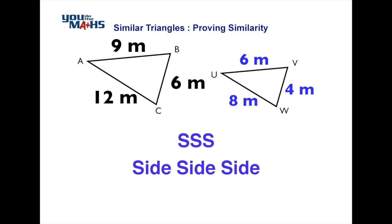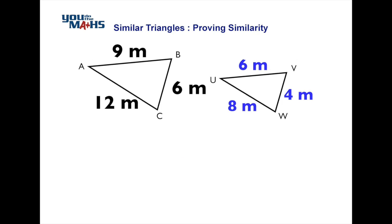This similarity condition is called side-side-side, and the basis of it is that every side on one triangle has been increased or decreased by the same factor to get to the other triangle. For consistency, we'll look at the large sides divided by the small sides, starting with the longest side on both triangles.